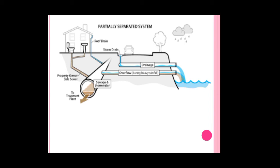This is the diagram of a partially separate system. In this diagram, we can see that there are separate systems of drainage and overflow during heavy rainfall, making it easy to collect water during the rainy season. There is also a separate sewage system where all sanitary water collected from houses and industries is collected in separate pipelines and undergoes treatment in a treatment plant. That treated water is then ready for reuse or discharge into a river.